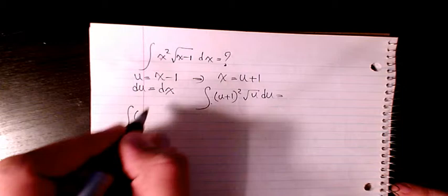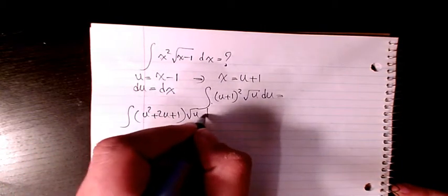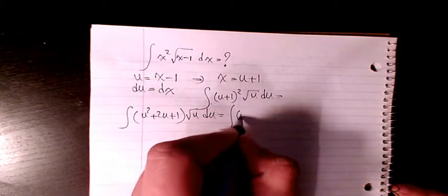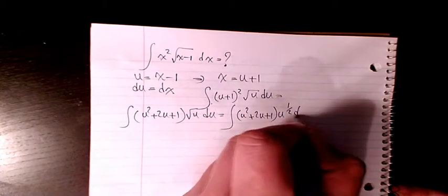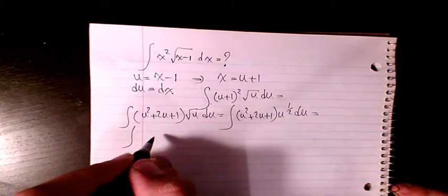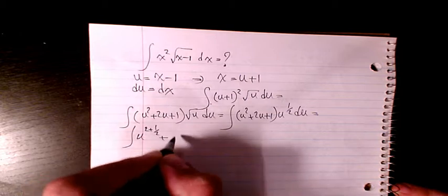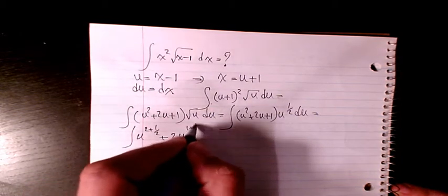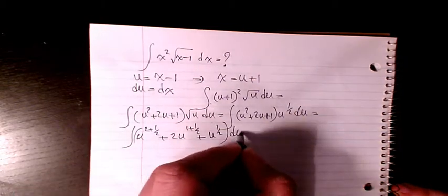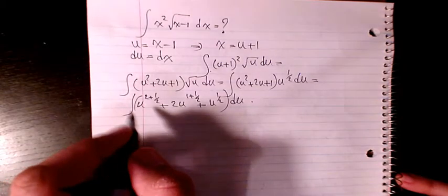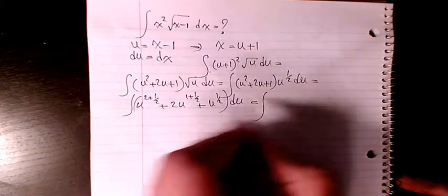Then I expand this: u plus 1 squared is u squared plus 2u plus 1, times root u, du. Then it will be u squared plus 2u plus 1 times u to the power 1 over 2 du. Then I have u to the power of 2 plus 1 over 2, plus 2u to the power of 1 plus 1 over 2, plus u to the power 1 over 2, du.